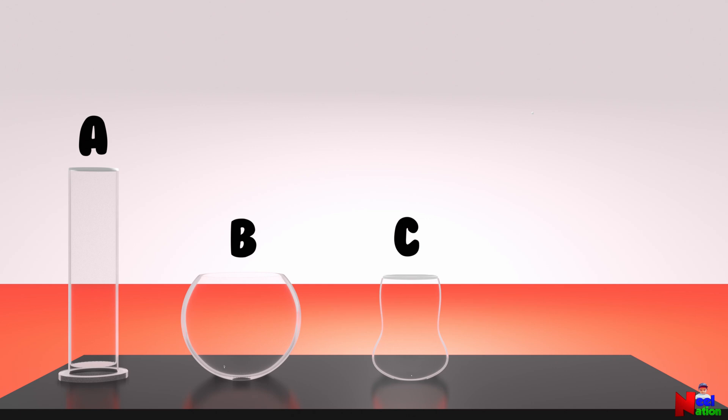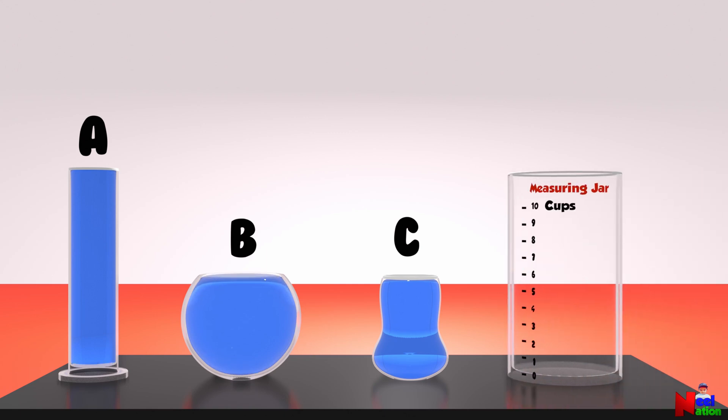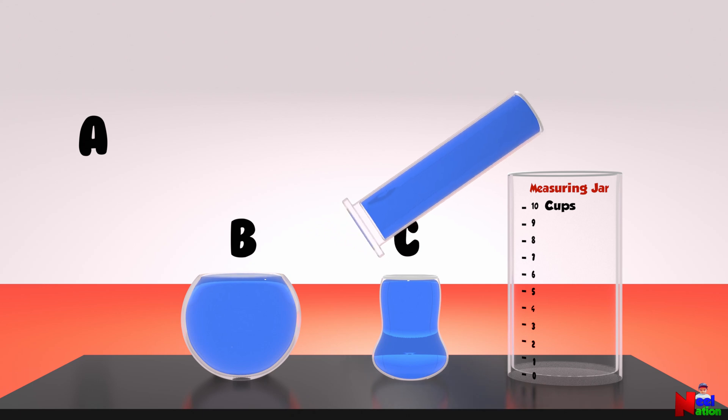One simple way to find out which container has a bigger volume is by measuring the amount of water it holds. Let's fill all this container with water. There we go. Let's measure the amount of water in the container using a measuring jar. Let's start with container A.